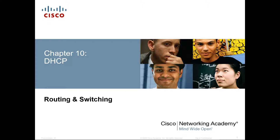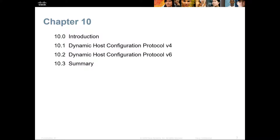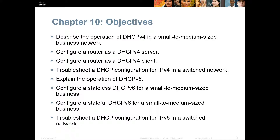Welcome. This is Routing and Switching Essentials, Chapter 10. Today we're talking specifically about DHCP, or Dynamic Host Control Protocol. We're going to cover basic DHCP, DHCP version 4, DHCP version 6, and end with a summary. The objectives are to implement DHCP — the client, the server, and basic configuration for all of the appropriate versions.